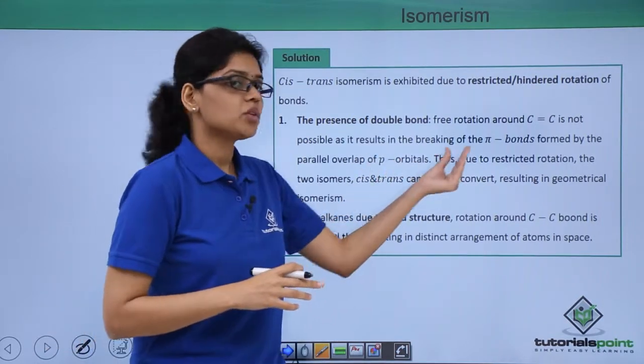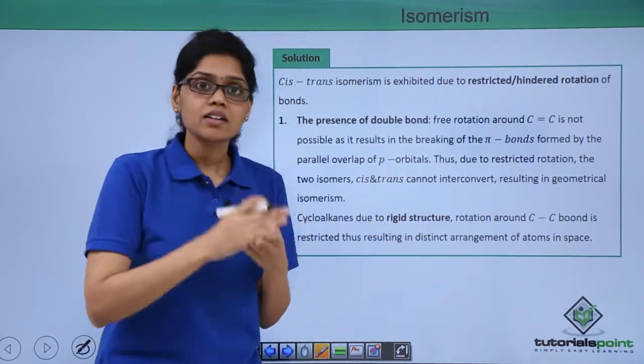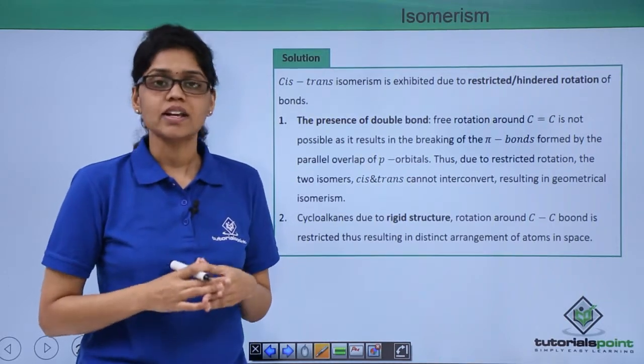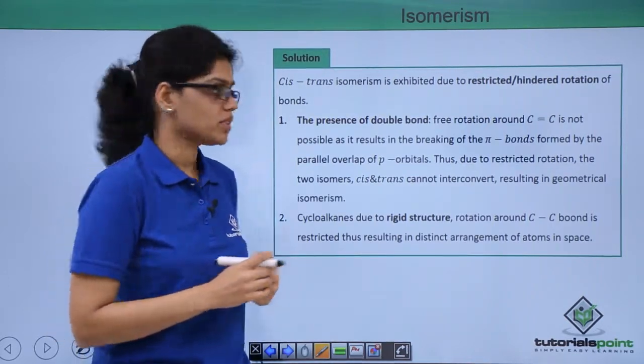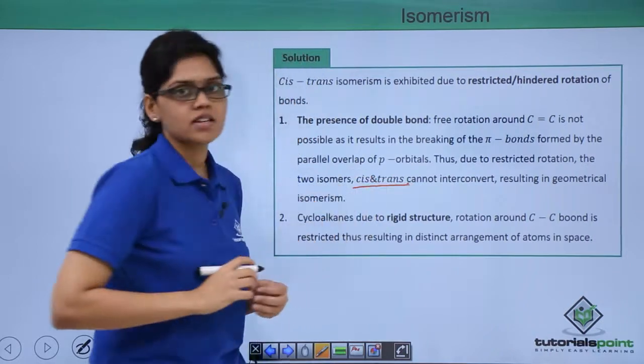This is essentially why, due to restricted rotation, interconversion between the two isomers is not possible and you end up getting two distinct isomers which are cis and trans isomer.